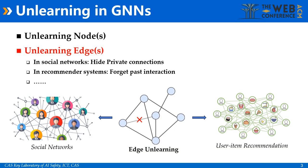In this paper, we focus on edge unlearning, a key unlearning scheme in graphs, owing to its pivotal role in online real-world applications to safeguard edge privacy. Consider the scenario where individuals in social networks may seek to conceal certain private social connections, or users in recommender systems want to erase their interactions with certain items.